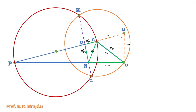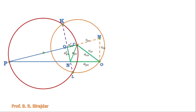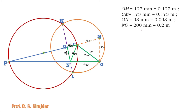This completes the velocity and acceleration diagrams for the problem. Now measuring the distances: O to M is 127 mm (0.127 meter), C to M is 173 mm (0.173 meter), Q to N (tangential acceleration) is 93 mm (0.093 meter), and O to N is 200 mm (0.2 meter).